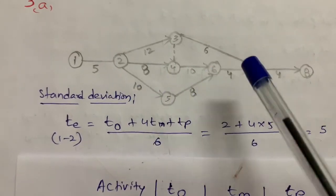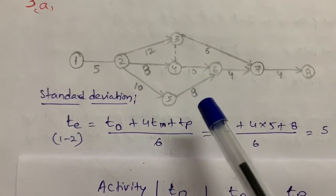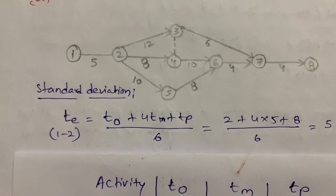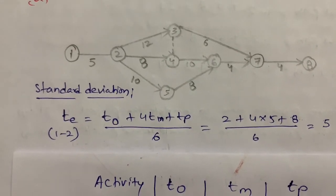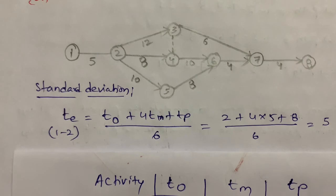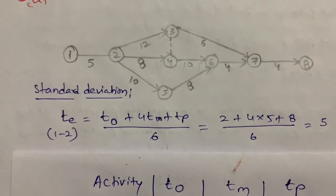After adding all these three paths, we will get the maximum value. That is the maximum duration of completion of the project. Like that, we will plot the critical path. I hope you understood this. Thank you so much. Thanks for watching.